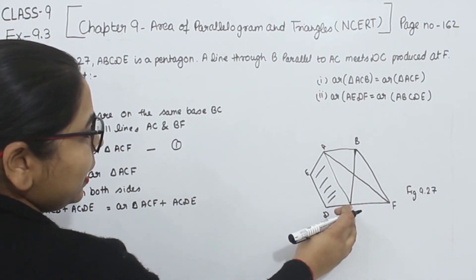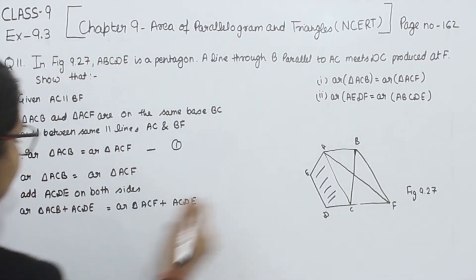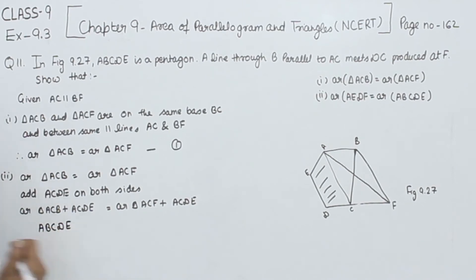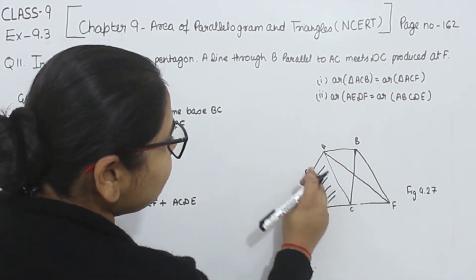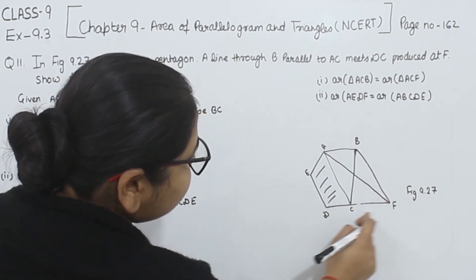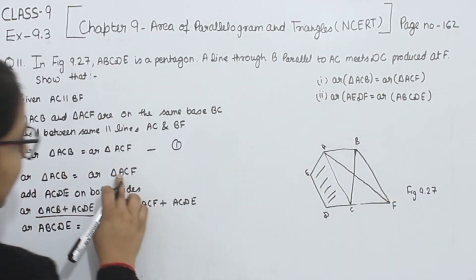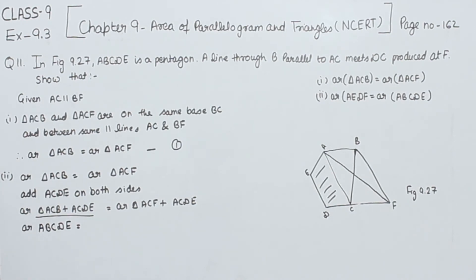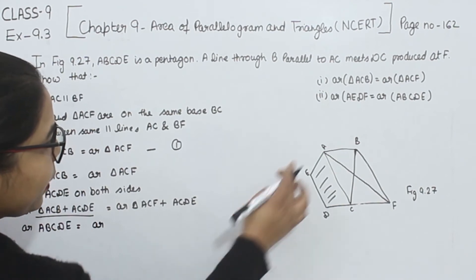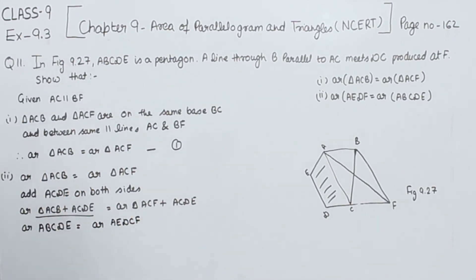So if we add ACDE to both sides, then area of triangle ACB plus ACDE equals area of triangle ACF plus ACDE. Combining the left side gives us pentagon ABCDE, and combining the right side gives us area AEDCF.